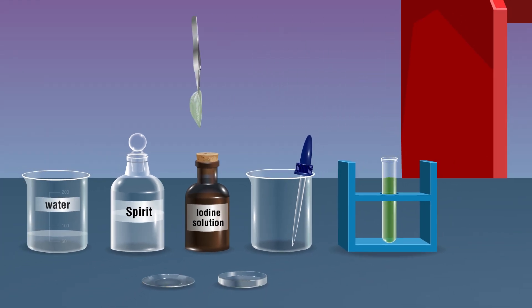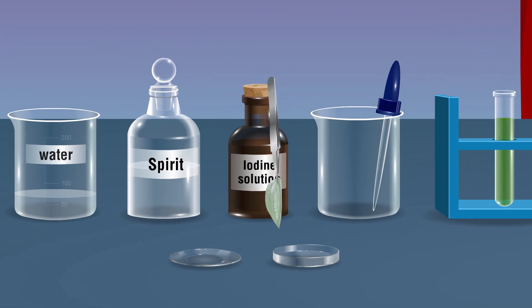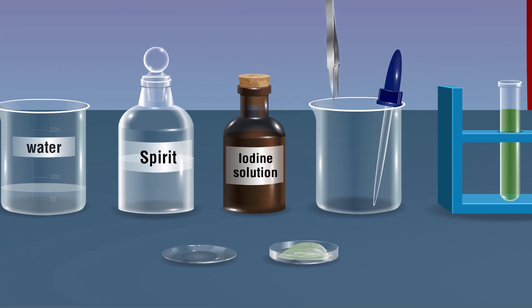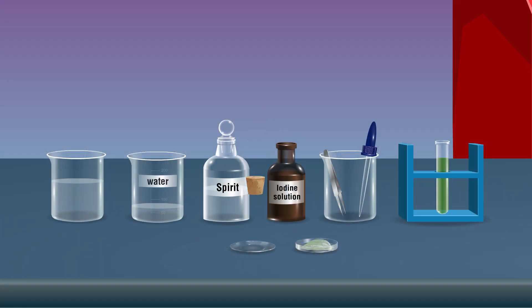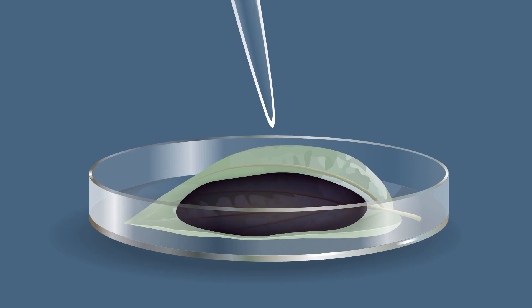Take the leaf from the test tube carefully and wash it with water. Add a few drops of iodine solution.